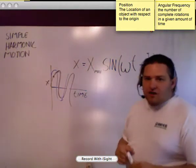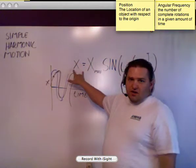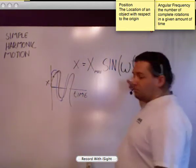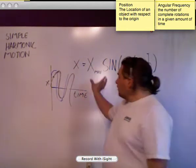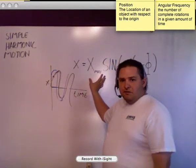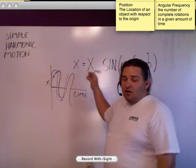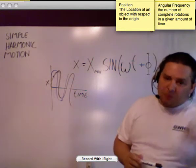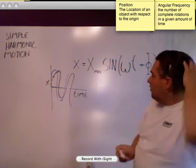So going over this again, this is final position. This is the location where the object is at some time. Okay? This right here is referring to the amplitude, X max. It's the amplitude of that wave at a given, or the amplitude of the wave at its maximum value from the equilibrium point or from the origin if you want to think of it that way.